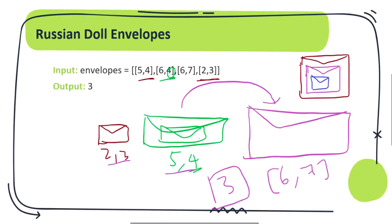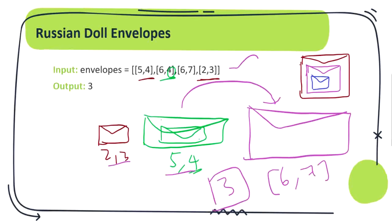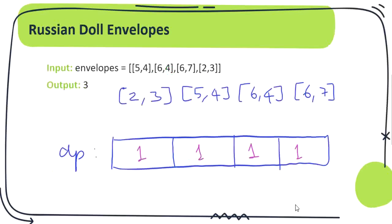The first intuition we get is that we have to sort the given array in ascending order so that we can find how many envelopes we can put into the next higher one. It is a typical dynamic programming solution where we have to find the longest increasing subsequence of the sorted array to arrive at our answer. To understand what the longest increasing subsequence is, check the link in the description.